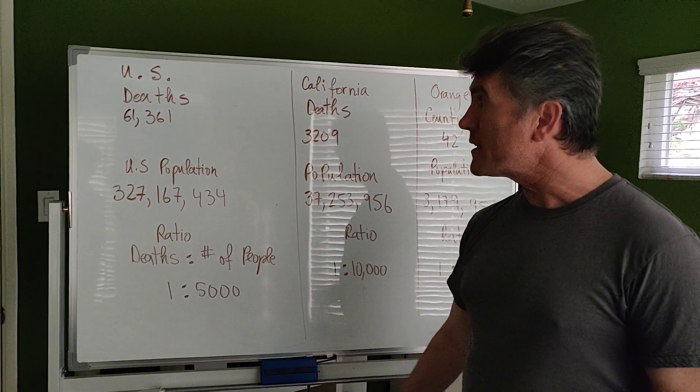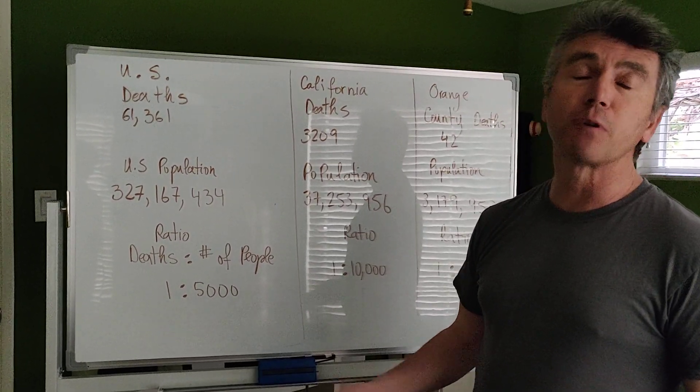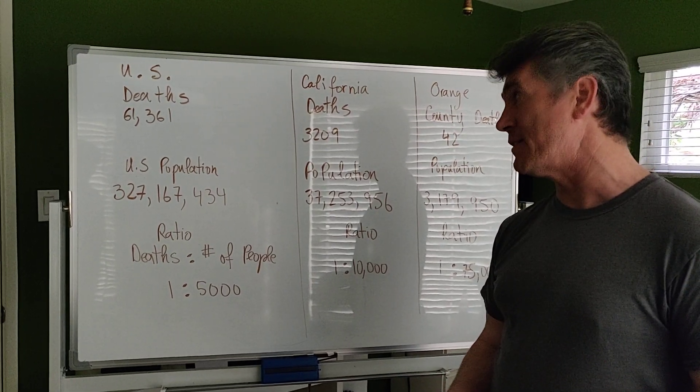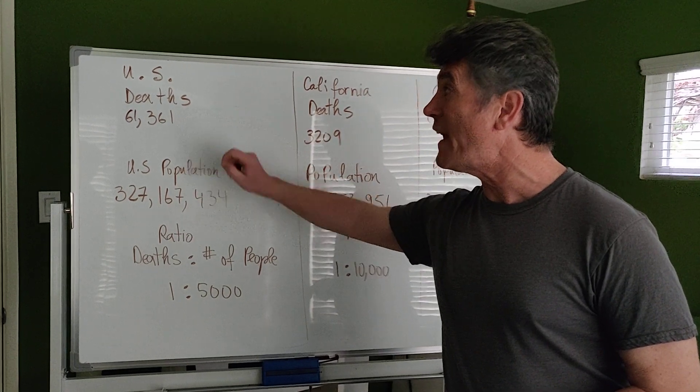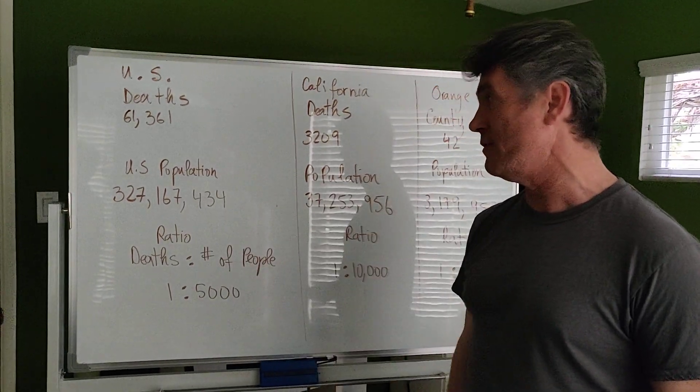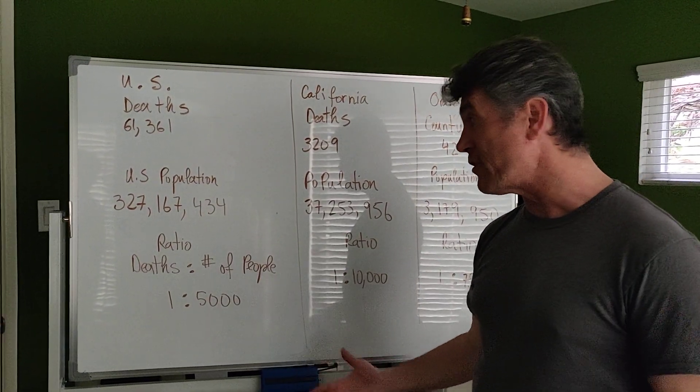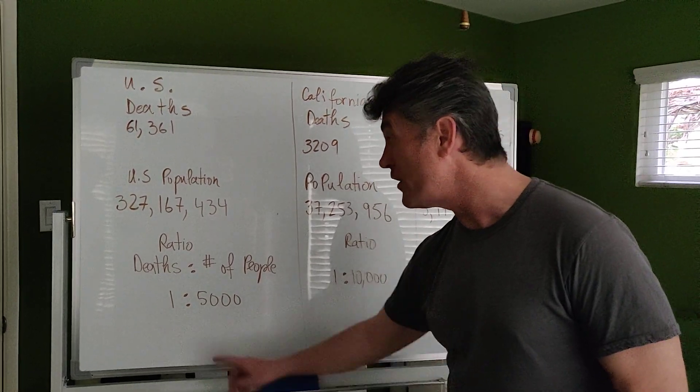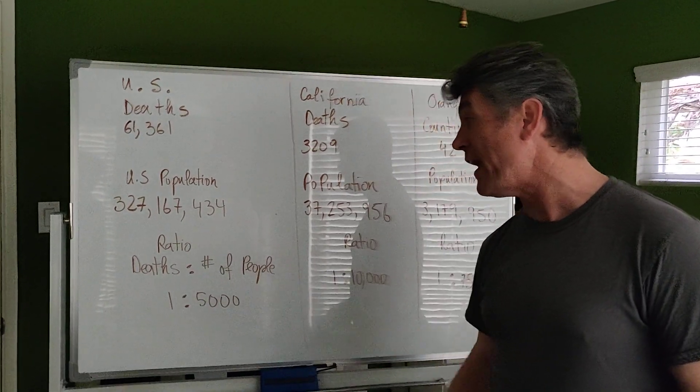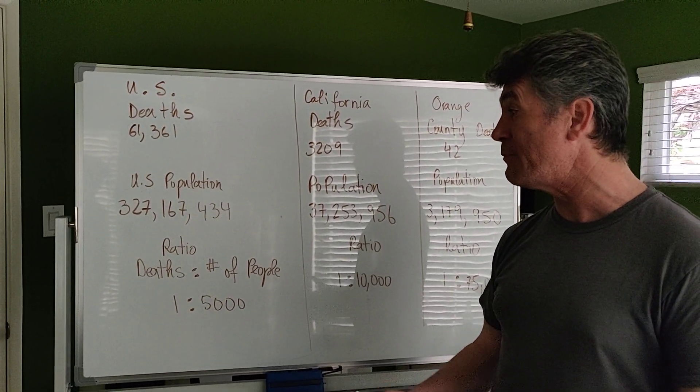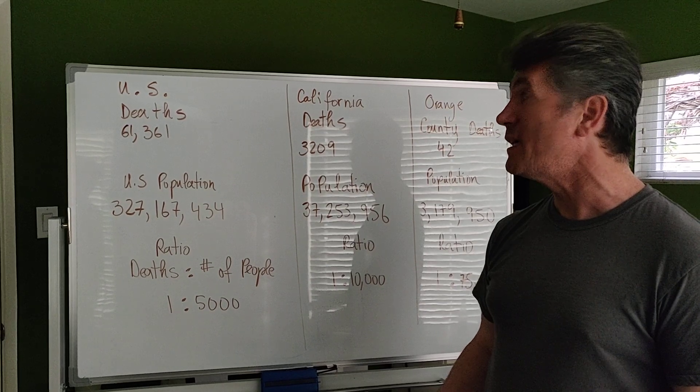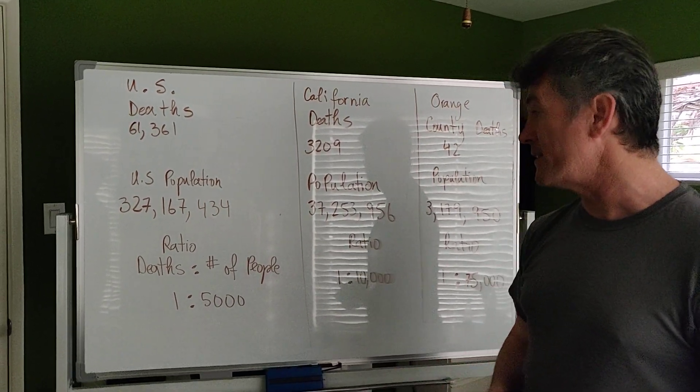The United States population is 327,167,434. If you divide the number of deaths by the U.S. population and you take a ratio, what you find out is that there is one death for every 5,000 people. So out of 5,000 people, only one dies of the COVID virus.